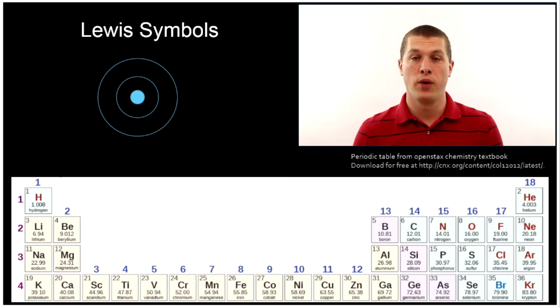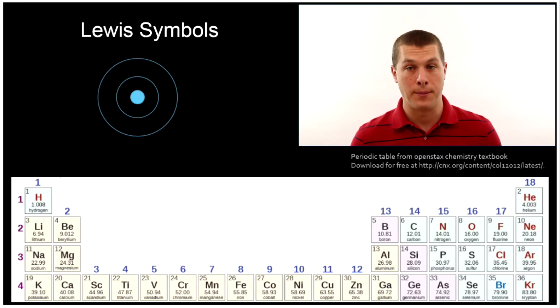Today we're going to be talking about Lewis symbols which are a way to tell you quickly how many valence electrons an atom has. Recall that valence electrons are really important for determining an element's properties and so that's why we want to use these Lewis symbols.